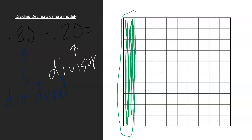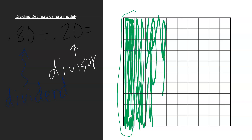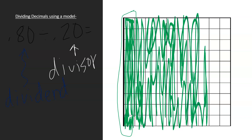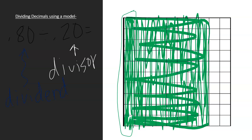We shade by counting in groups of ten: 10, 20, 30, 40, 50, 60, 70, 80 hundredths — also called eight tenths. We just finished shading. It doesn't have to be perfect as long as you know what you did. In class we spent time coloring this in to perfection with our crayons and markers on the whiteboard.